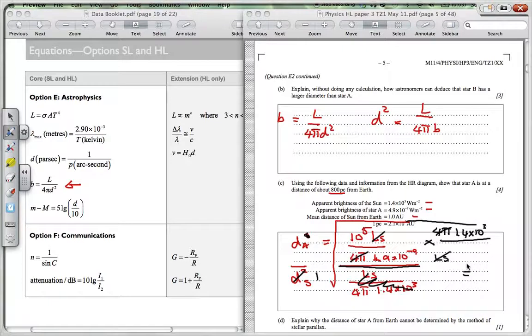And so I'm going to do that on the calculator. So we're going to have 10 to the 5 times 1.4 times 10 to the 3 divided by 4.9 times 10 to the -9.